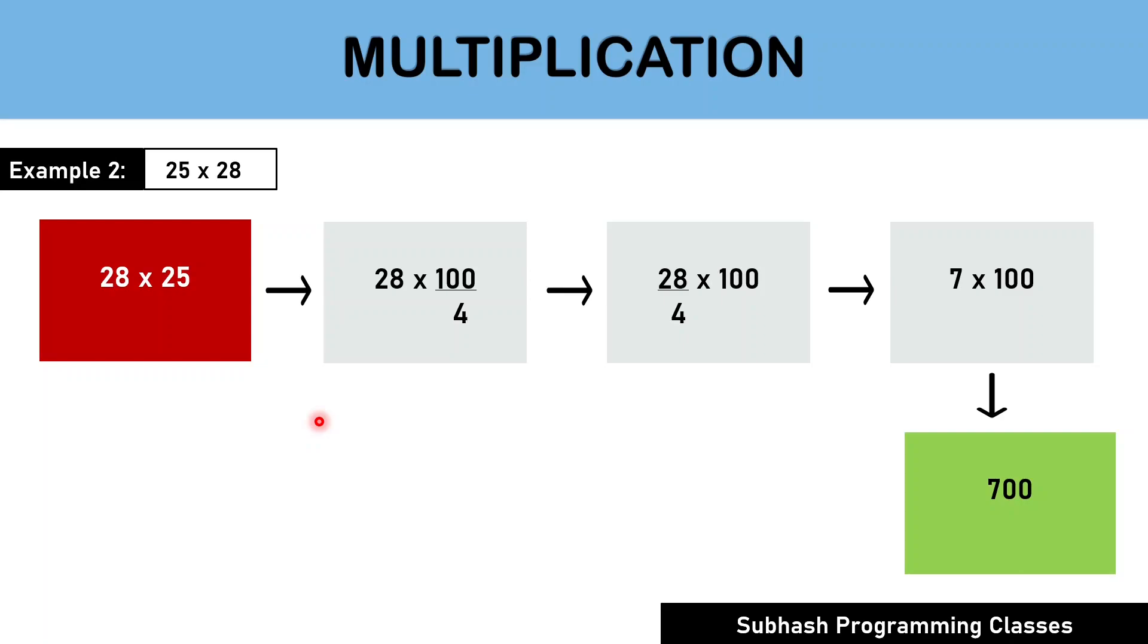Now, let us take another example of multiplying 68 with 75. In this case, we know 75 is 3 fourth of 100. And therefore, we can easily replace 75 with 3 by 4 multiplied by 100. Therefore, 68 divided by 4 will result in 17 which when multiplied by 3 will result in 51 which when multiplied by 100 will result in the final answer of 5100. This is how we can simplify complicated looking calculations easily using our mental power.